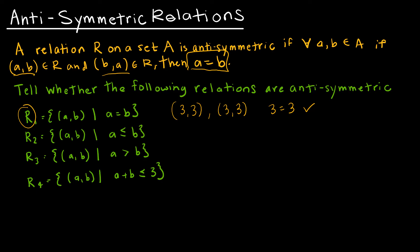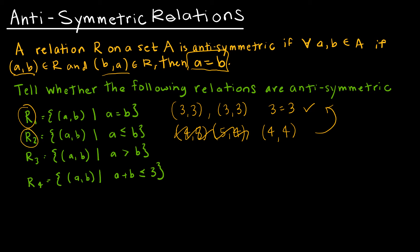R2 says A is less than or equal to B. If (4, 5) is in the relation, is (5, 4) also in the relation? No. So I don't need to check if A equals B. For a case like (4, 4), switching gives (4, 4) — exactly the same. Because of the 'or equal to', in order for both (A, B) and (B, A) to be in R2, the two values must be exactly the same. So R2 is antisymmetric.